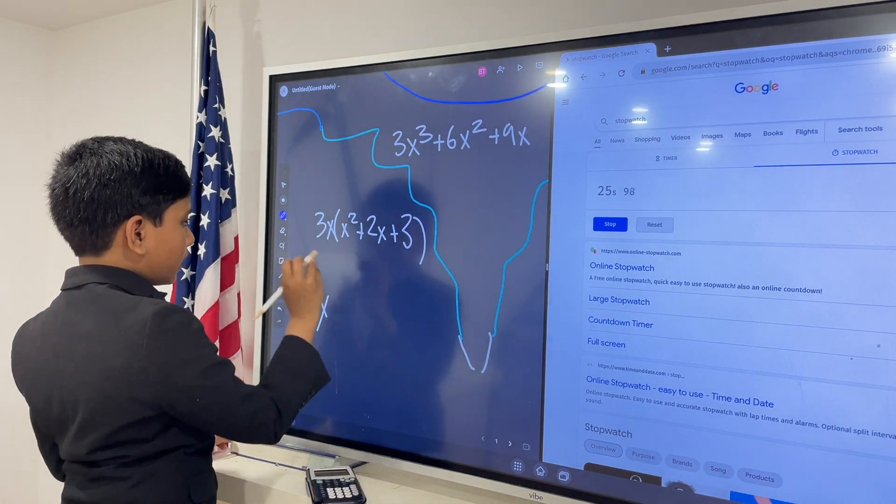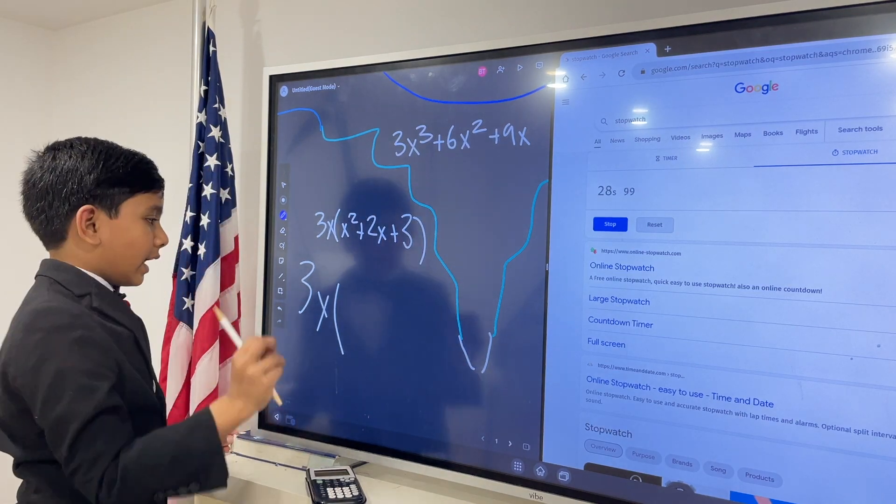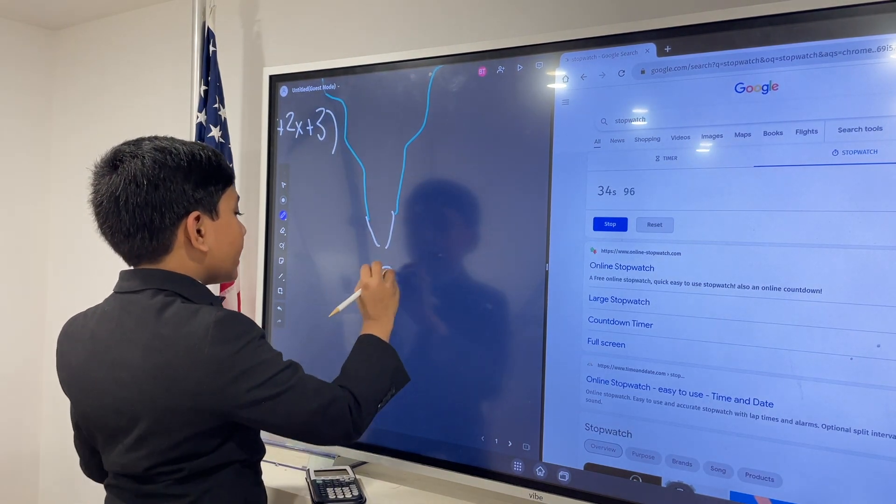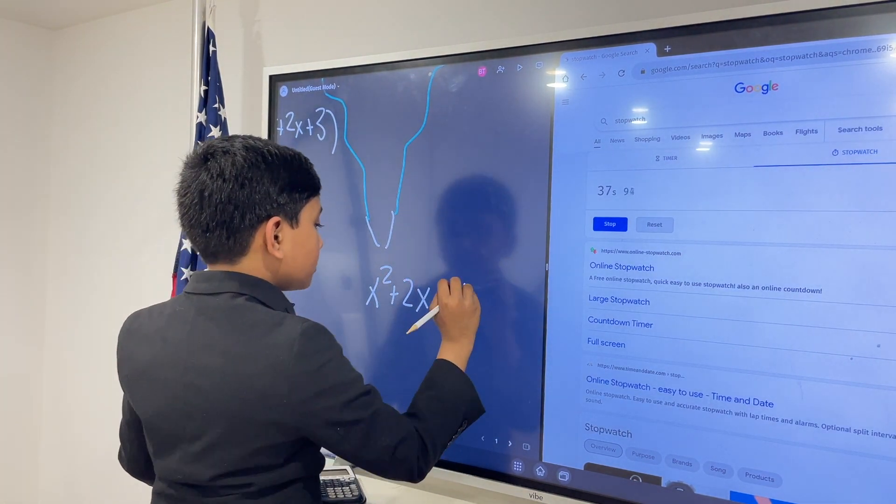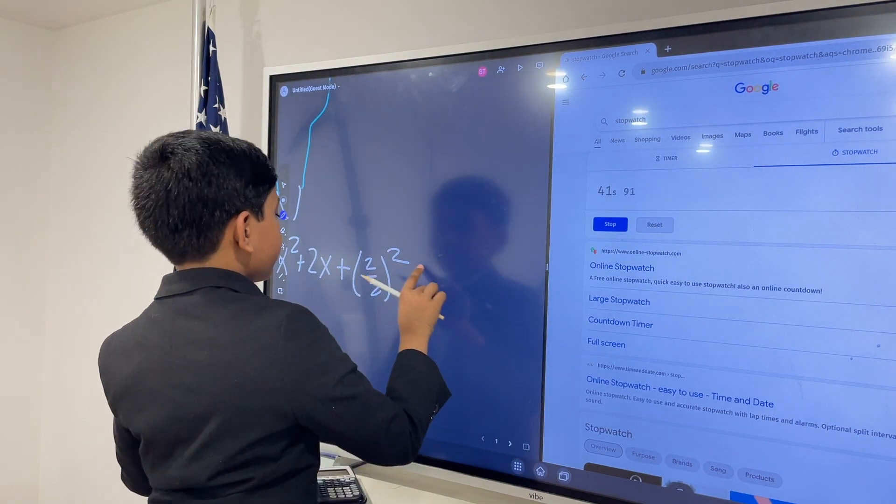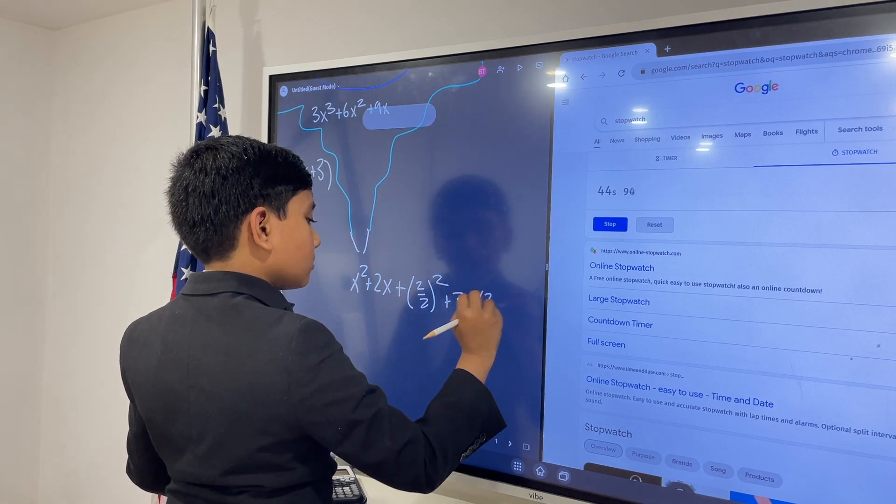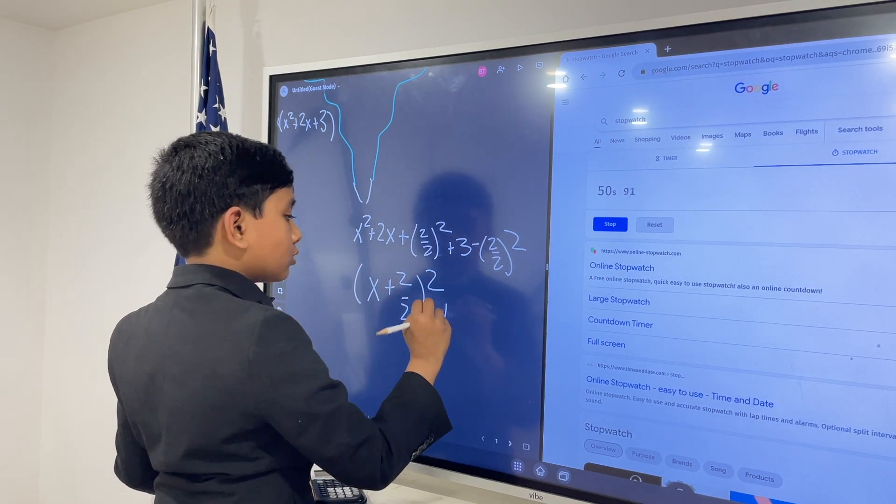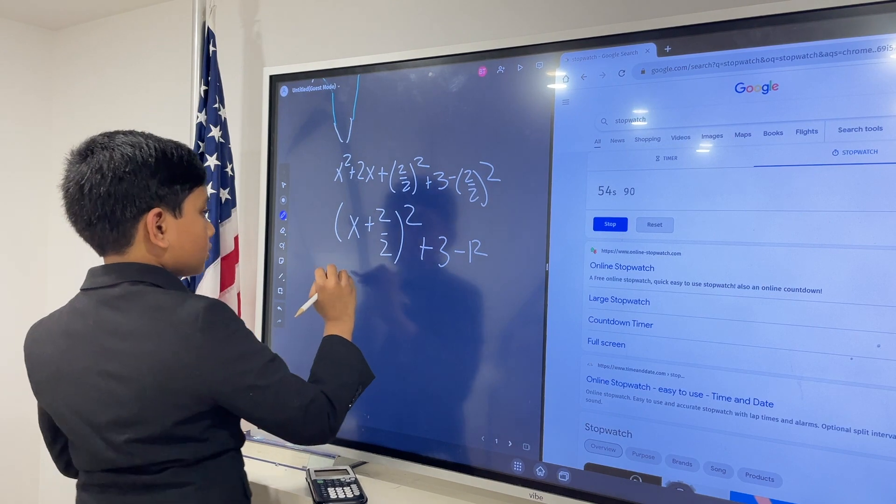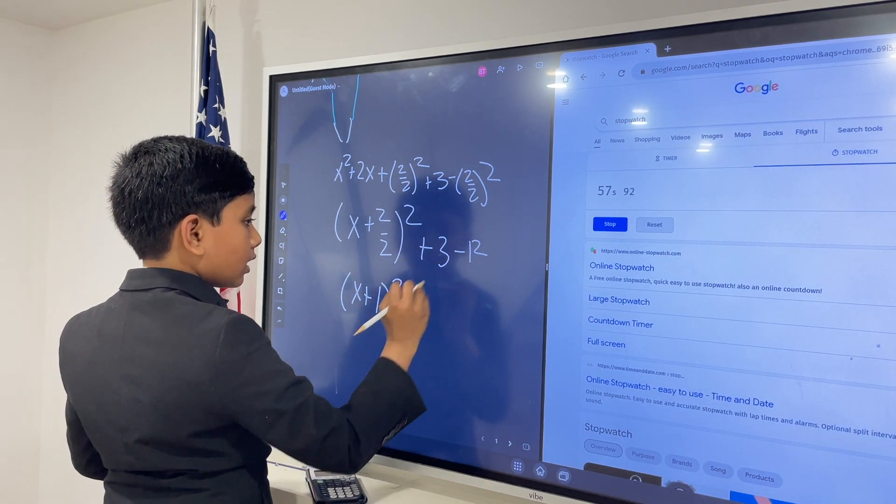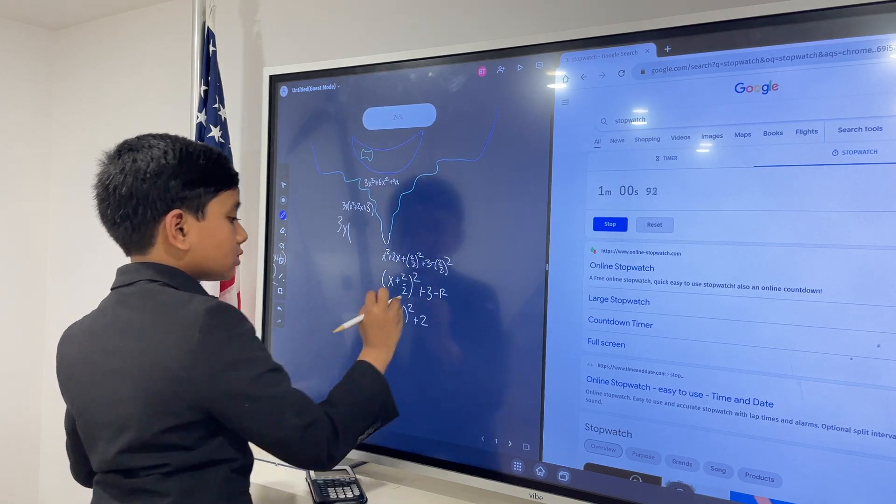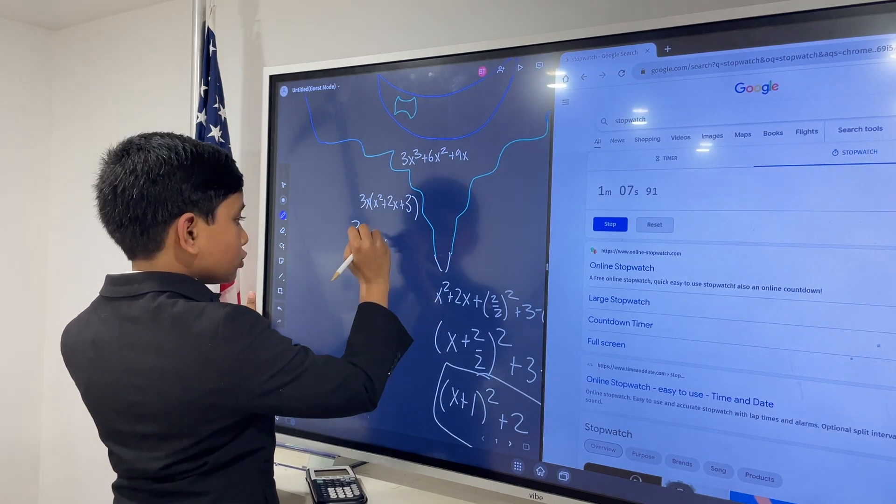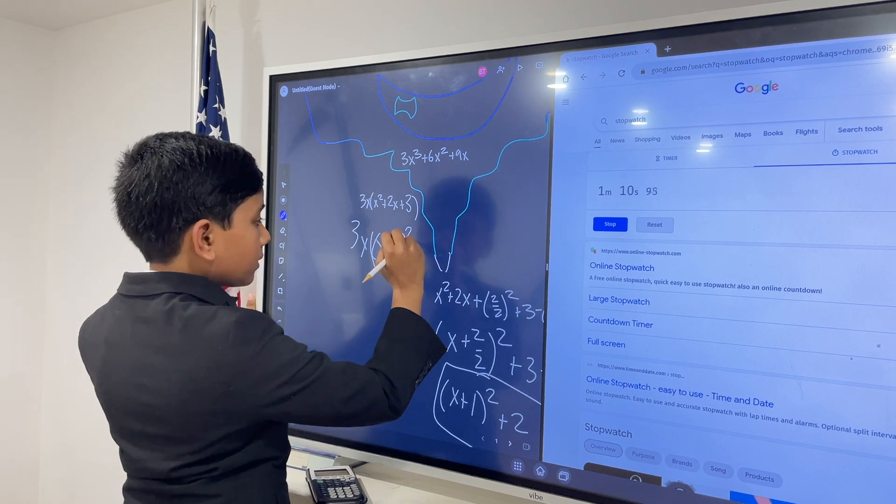Oh, goodness. This looks like we have to complete the square. Yeah, we definitely have to complete the square. So, let's see. I'm going to do the completing on this side. So, plus 2 over 2 squared, plus 3 minus 2 over 2 squared. Then, we get x plus 2 over 2 squared, plus 3 minus 1 squared. So, we get x plus 1 squared. Plus 3 minus 1 is 2. x squared plus 1. So, 3x times (x plus 1 squared plus 2). And that's it.